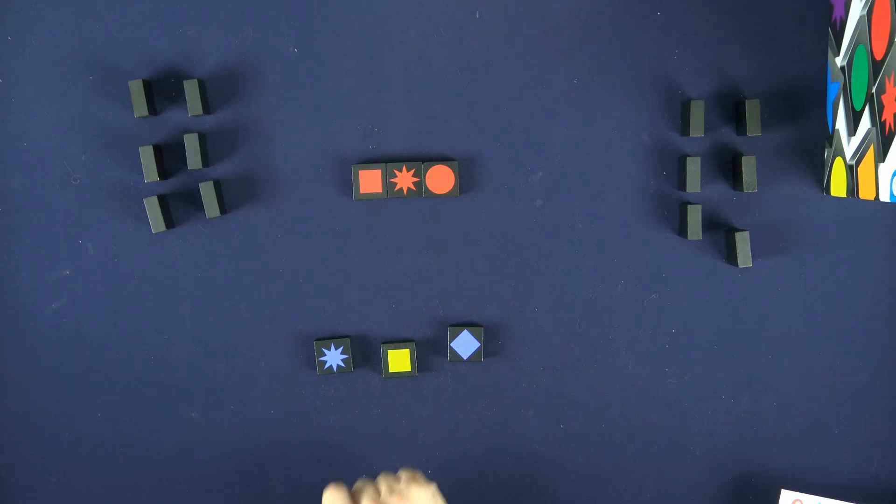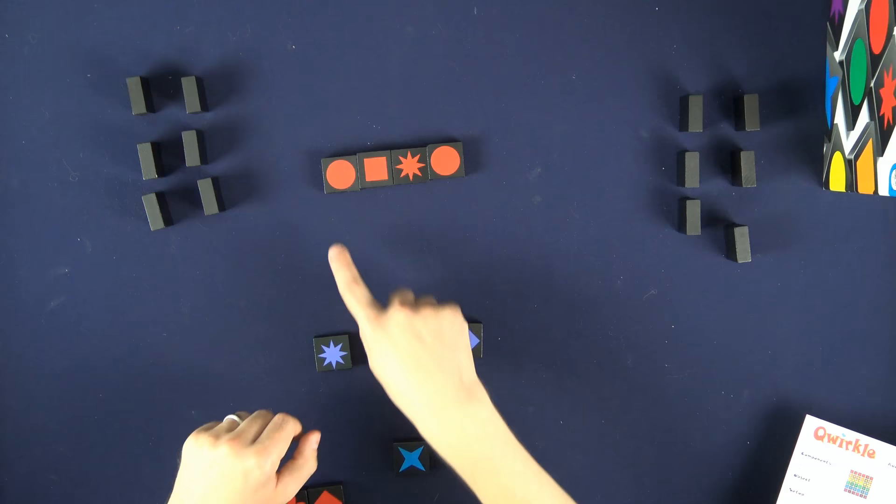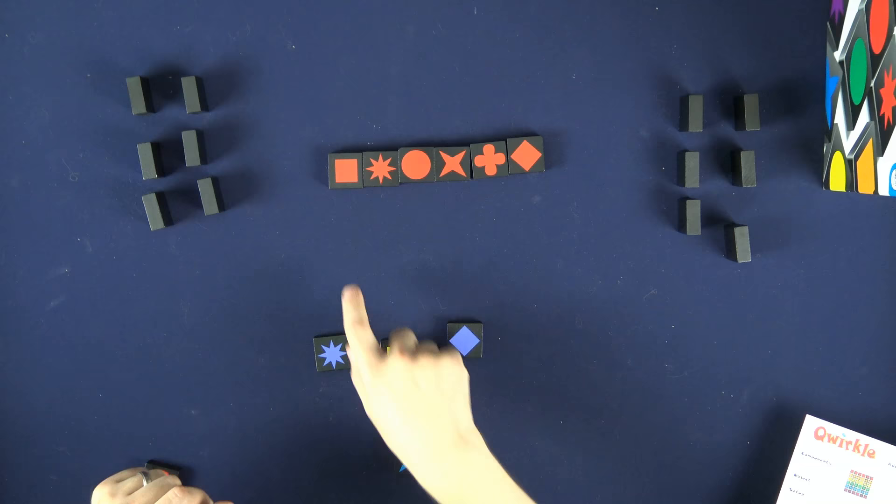Players are going to be trying to make lines of different tiles that are all the same shape or all the same color. You can never place an identical tile in the same line, they all have to be different, so each line can be a maximum of six tiles since there are six different shapes and there are six different colors.